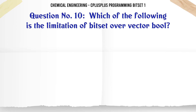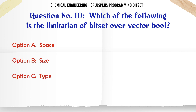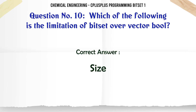Which of the following is the limitation of bitset over vector bool? A. Space. B. Size. C. Type. D. Speed. The correct answer is size.